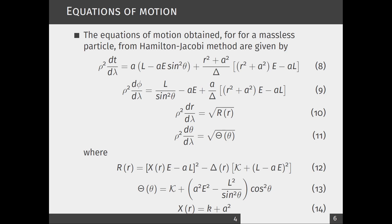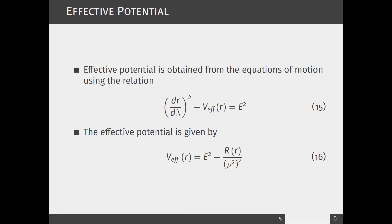Using these equations of motion, we can find the effective potential. The effective potential is obtained from the relation (dr/dλ)² + V_eff(r) = E². From this equation we can arrive at an equation for effective potential: V_eff = E² - R(r)/(ρ²). The value of ṙ is given in the equations of motion.